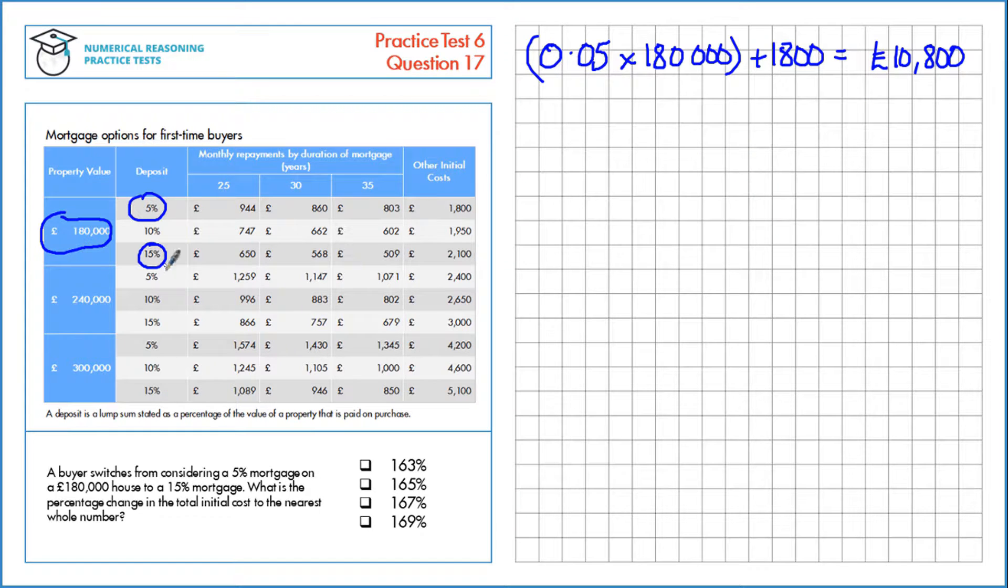Let's make the same calculation but for a 15% mortgage. 15% is 0.15, and we're going to multiply that by 180,000. Then we need to look and see if there's any other initial costs, and there are here. That's 2,100. So in total we have £29,100 in total initial costs there. Let's calculate the percentage change.